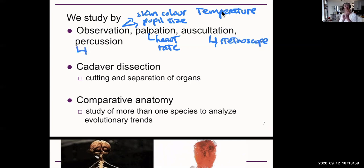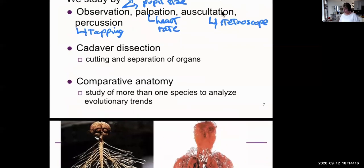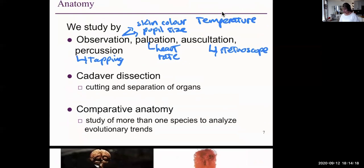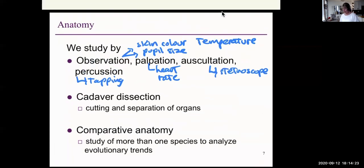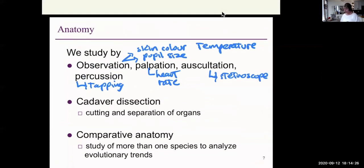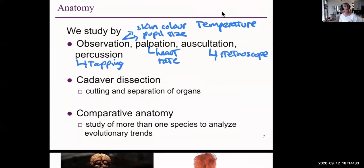Percussion is tapping. Tapping, for example, to see whether or not there is liquid in the lungs so that the back will be tapped and you can tell whether it's hollow or not hollow by the sound that it makes. We also use cadaver dissection, the cutting and separation of organs. And another method is known as comparative anatomy, and that is where we study more than one species that are related to humans to analyze evolutionary trends.